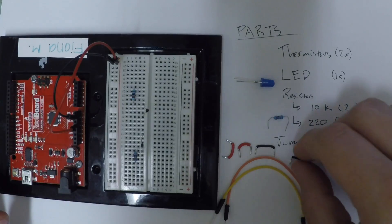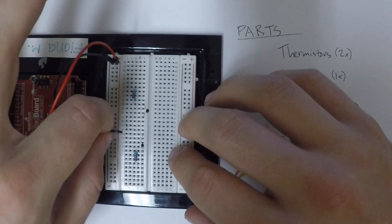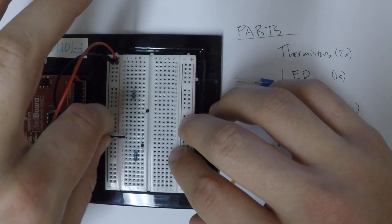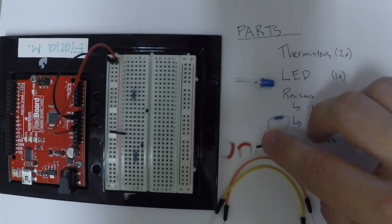Okay, so now that those are both in, we'll take jumper wires to connect one side of the voltage divider to ground. In this case I use the thermistor side. And the other side of the voltage divider to positive 5 volts from the Arduino.